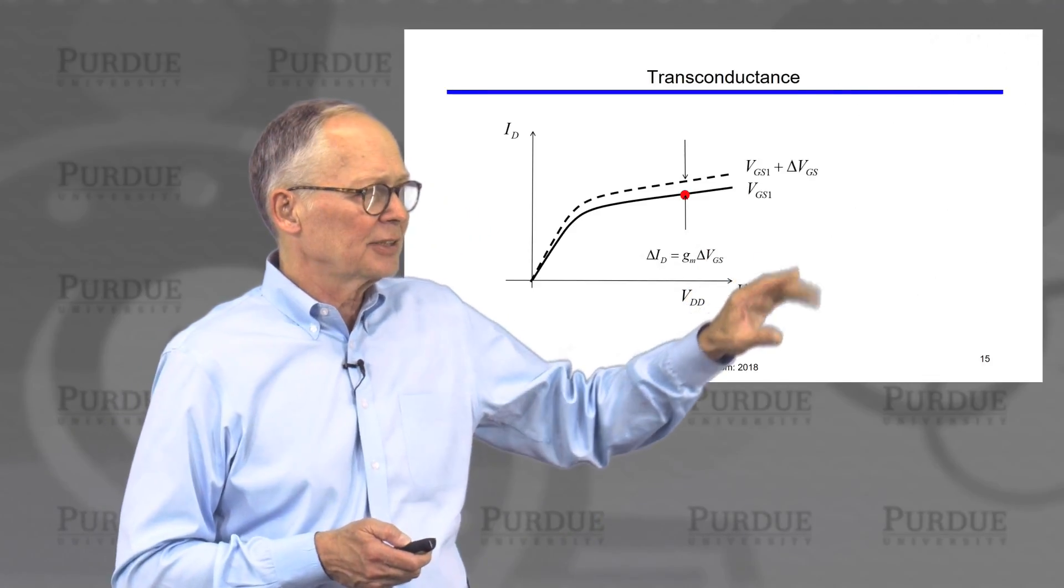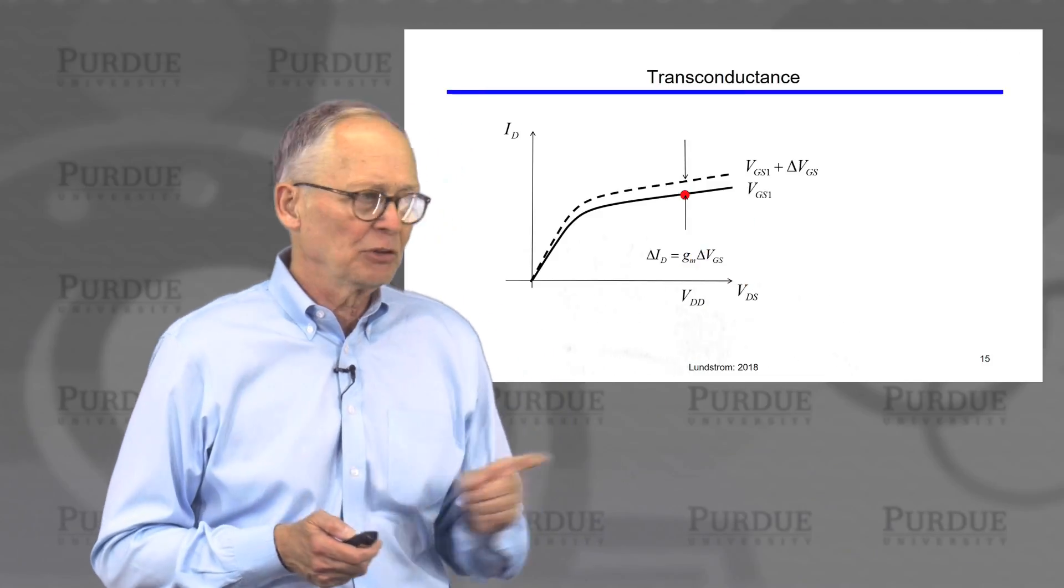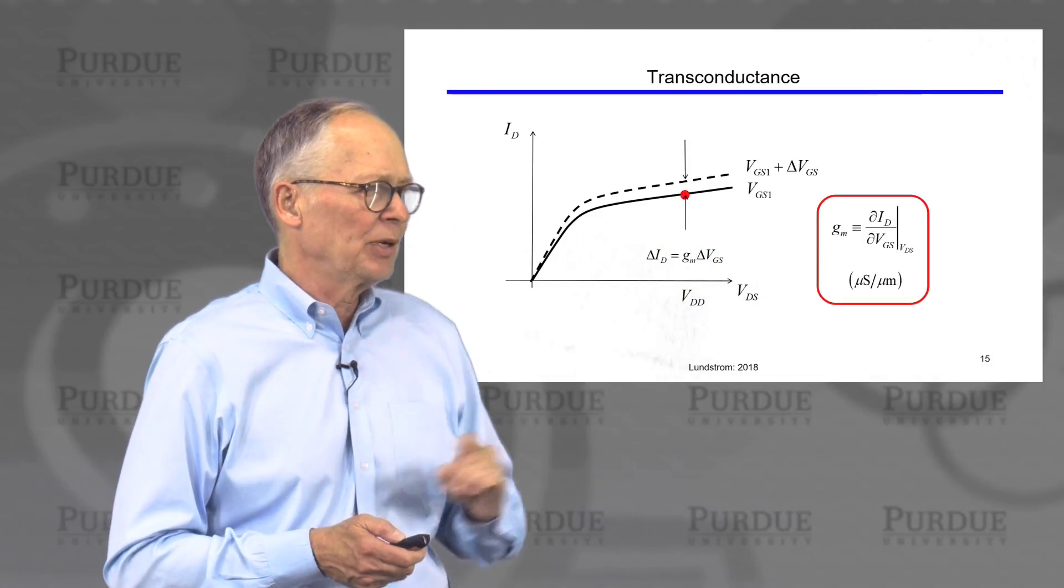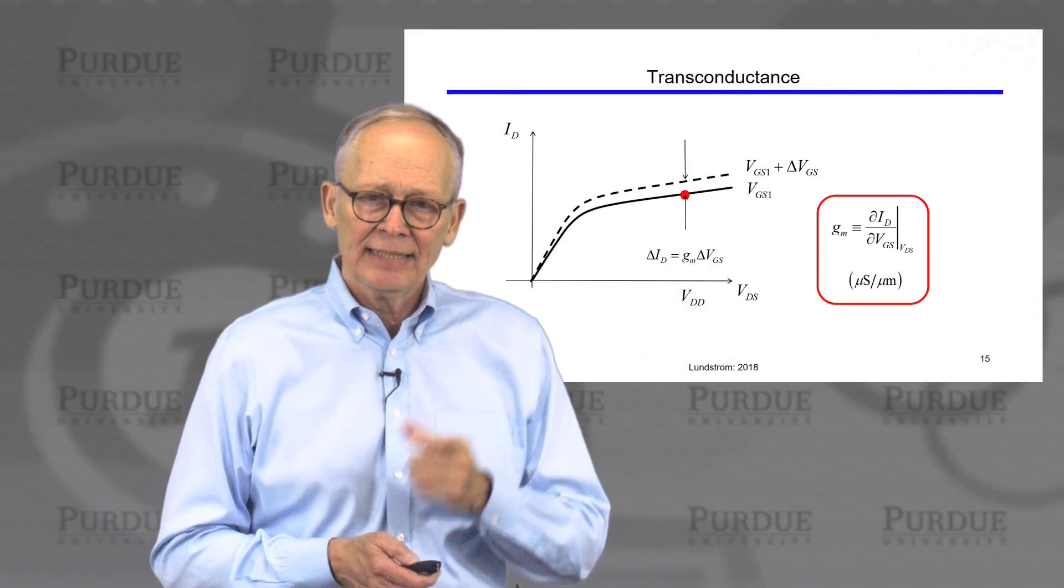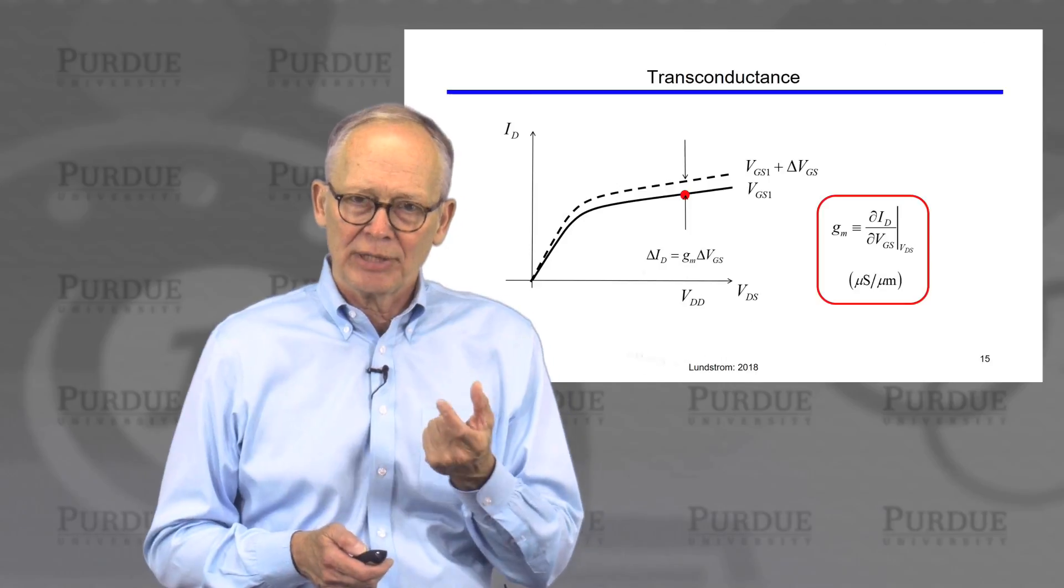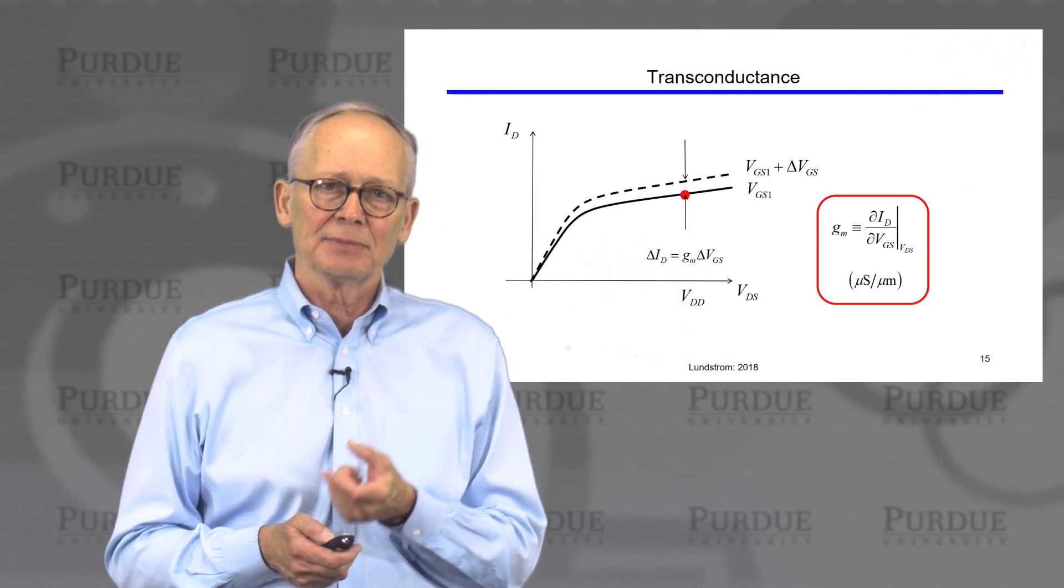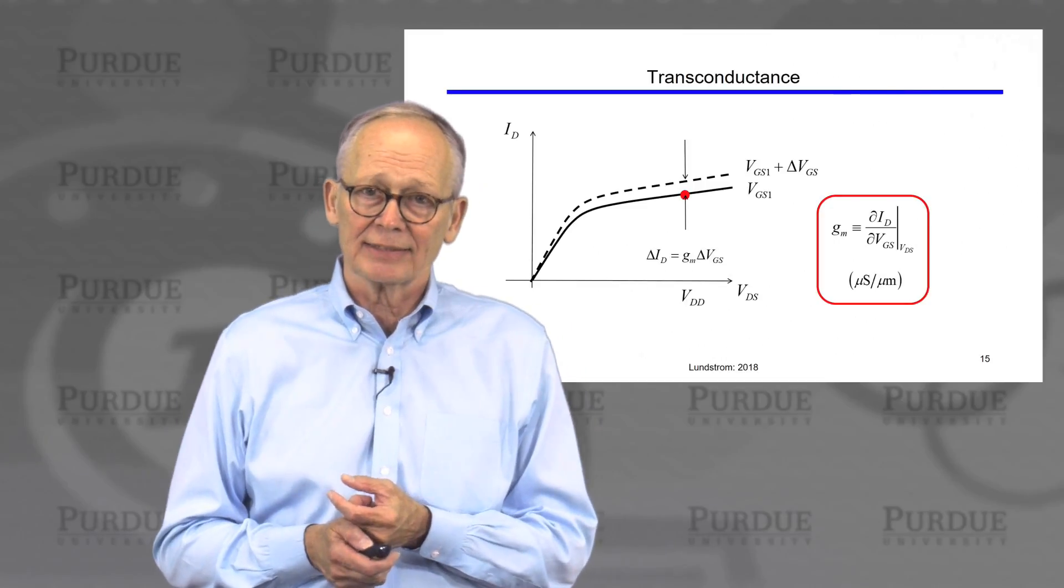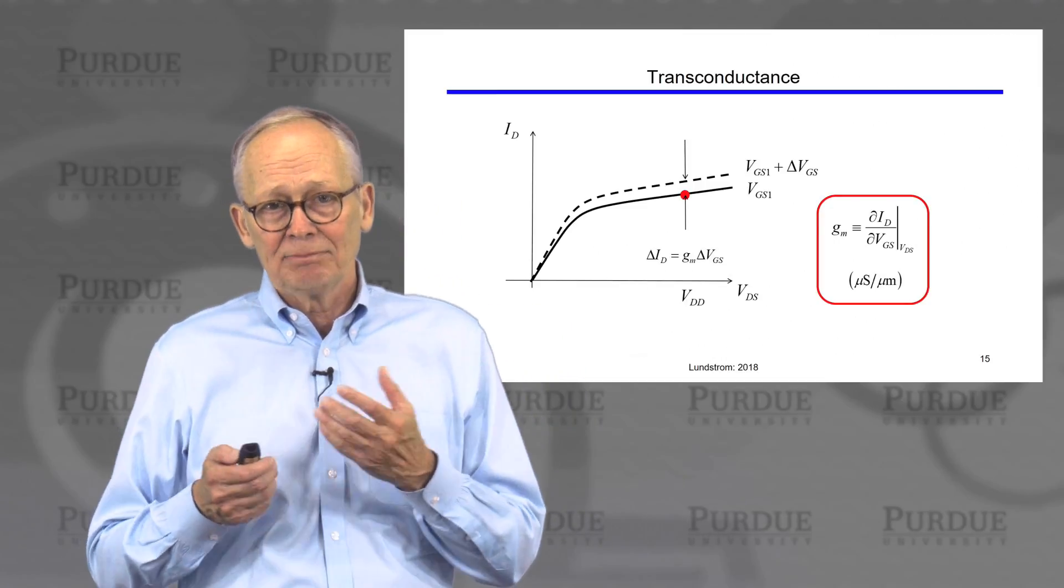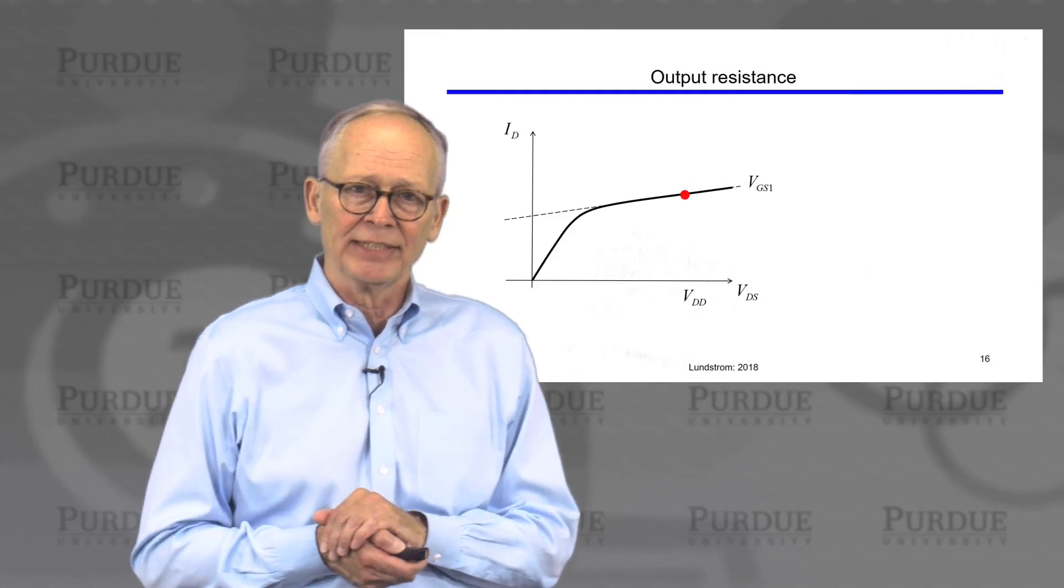The transconductance, we can extract from a measured characteristic just by perturbing the gate voltage a little bit and seeing how much the drain voltage increases. The delta ID divided by the delta VG is the transconductance. We would make that delta small and then we would have an estimate for the small signal transconductance, usually quoted in microsiemens per micrometer, sometimes millisiemens per micrometer, whatever is convenient.